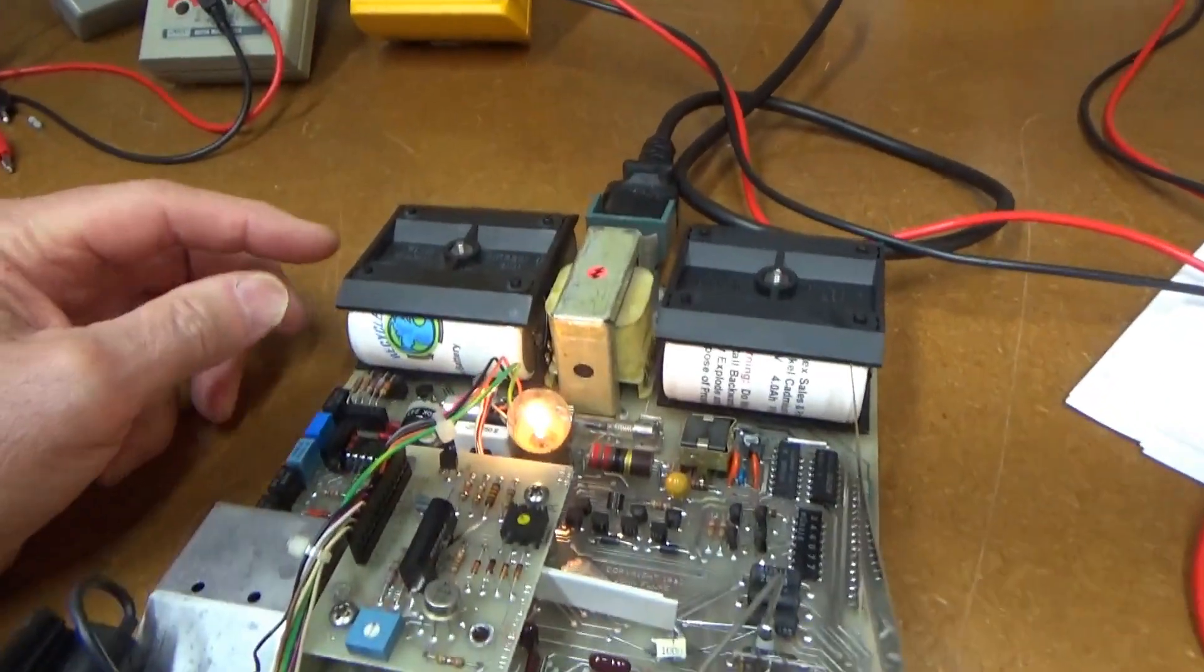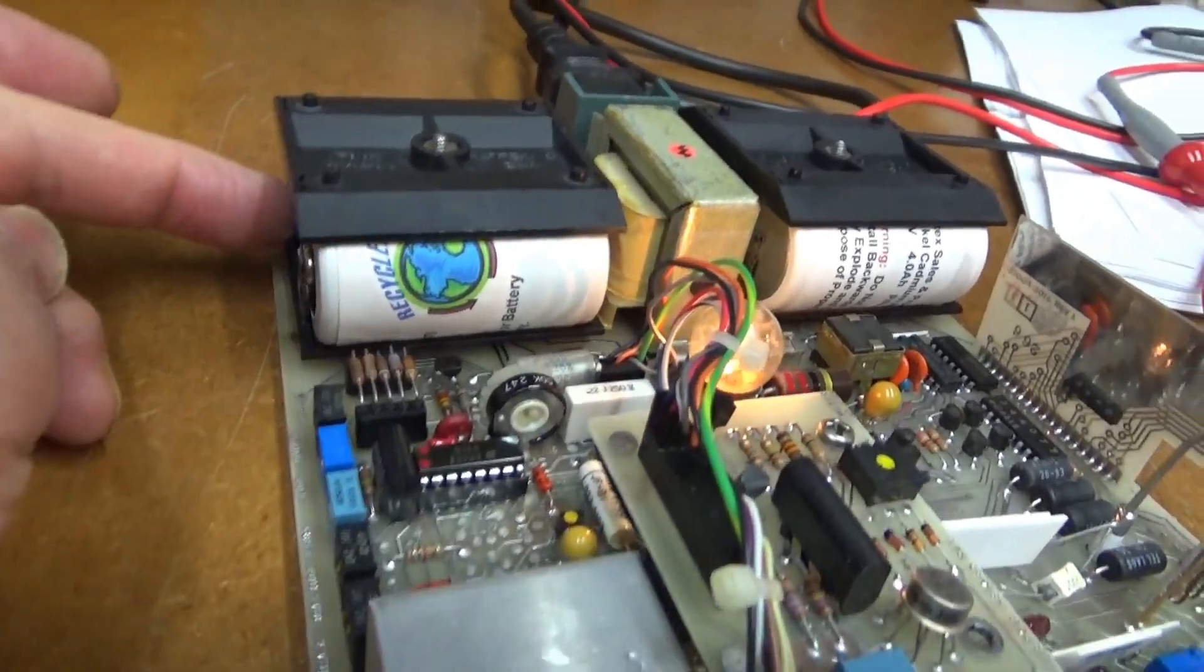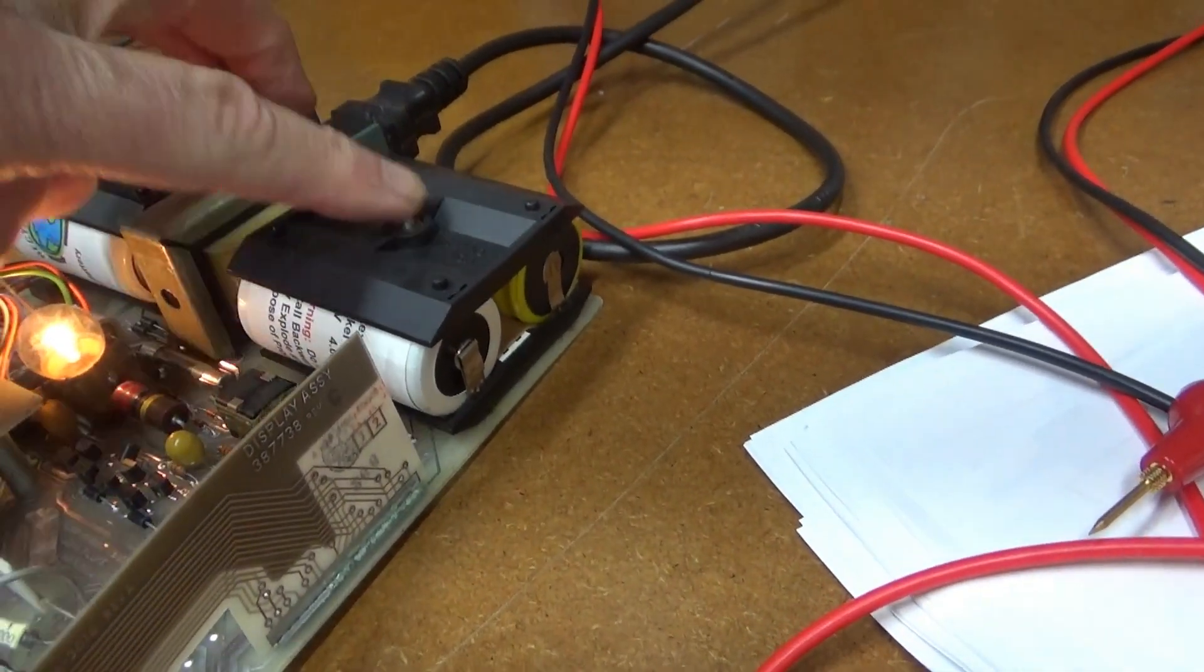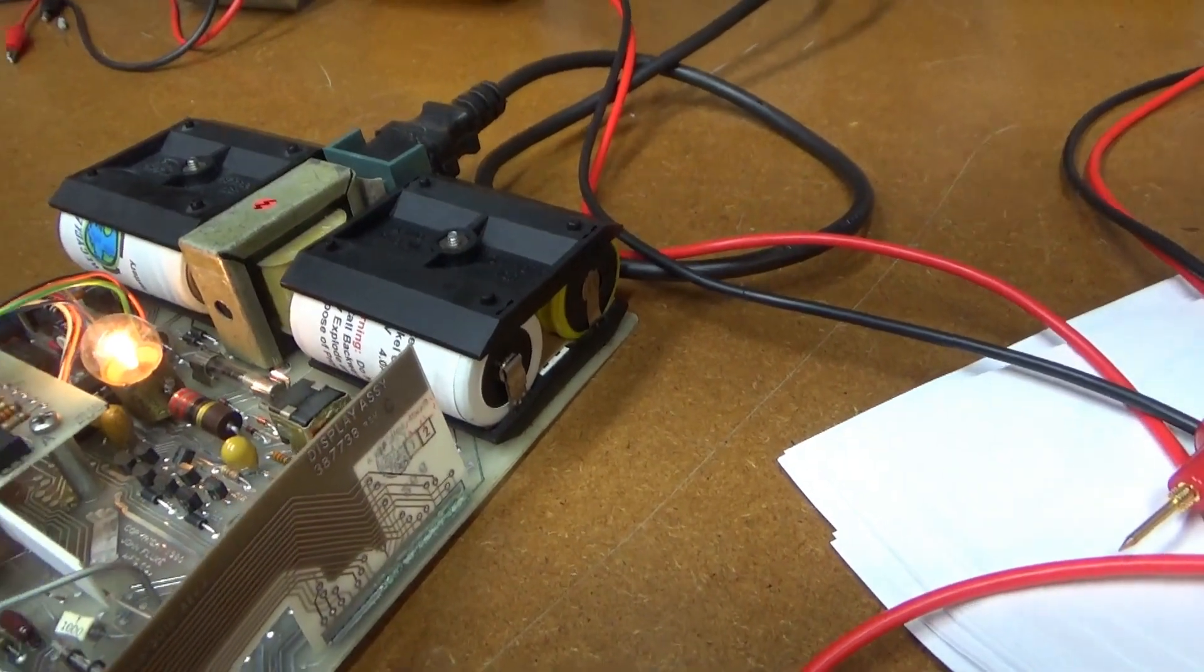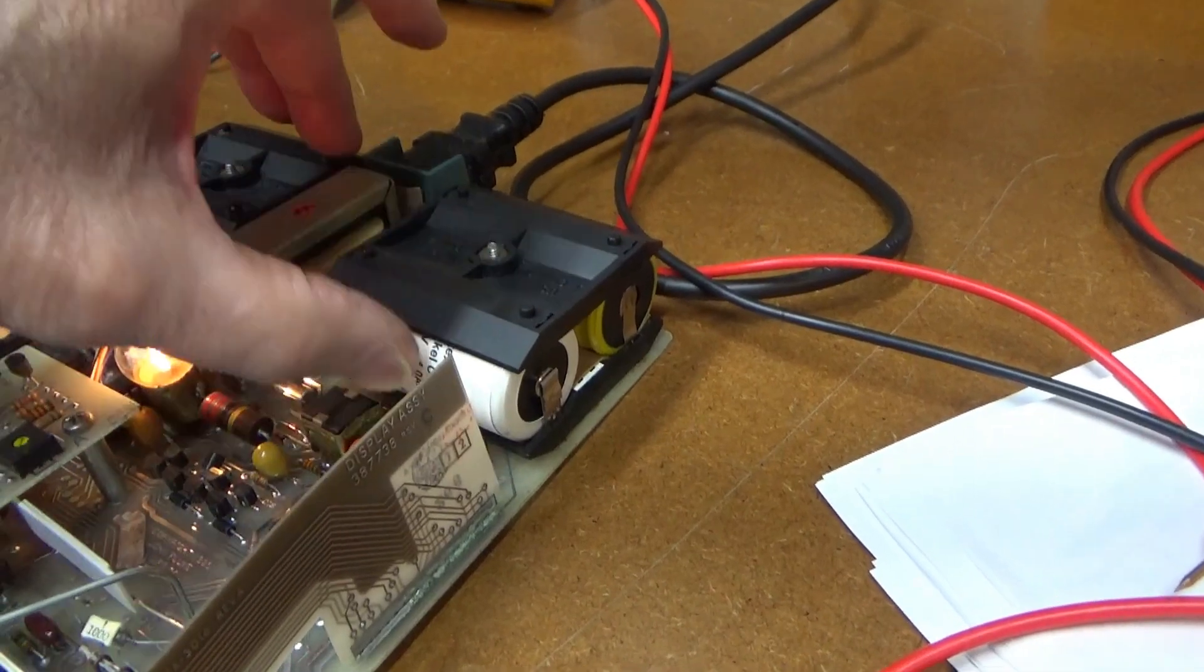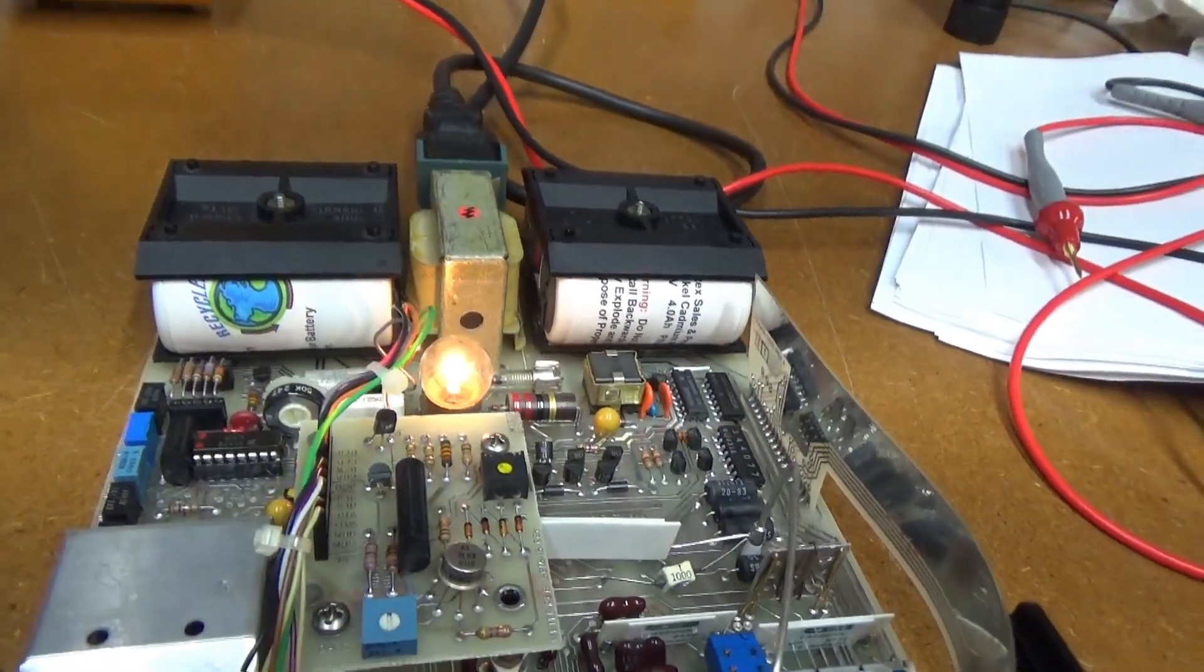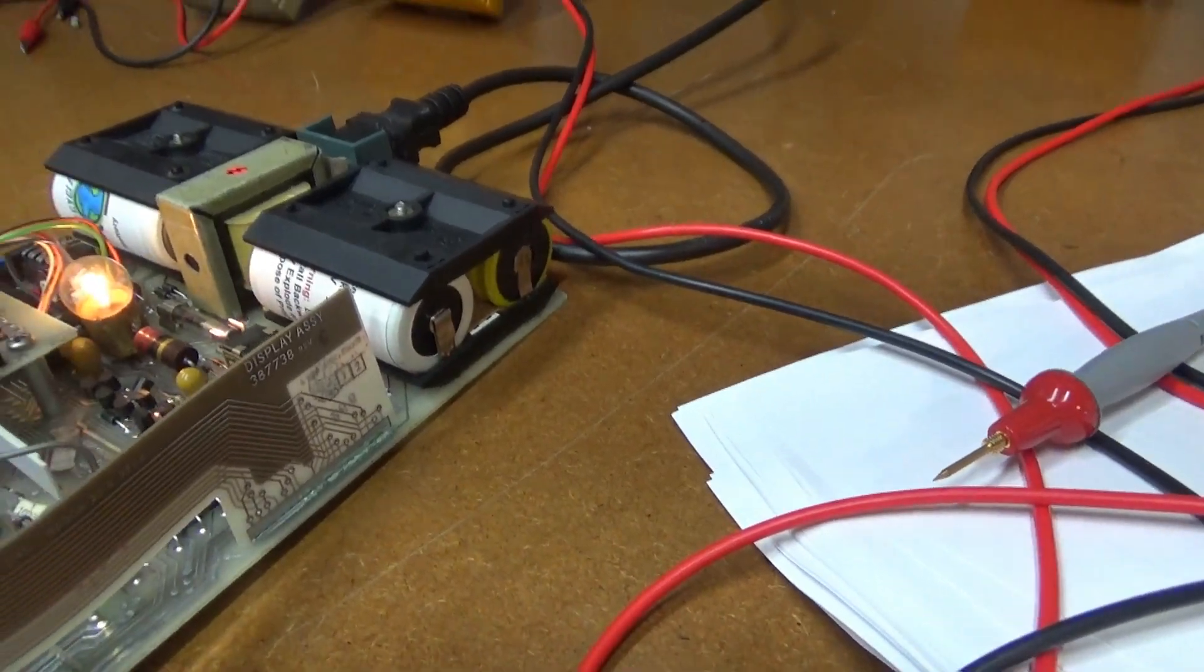Alright, couple things I've discovered. Number one, two of these batteries, these two back ones, are dead. They'll charge up, or seem to charge up, but as soon as you turn the charging power off, with the meter turned on, they immediately start dropping down in voltage, down to nothing. These two front ones seem to be okay. So I'll probably just get four new NiCAD D-cells, just to have this thing be able to operate on battery power. I think that'd be cool.